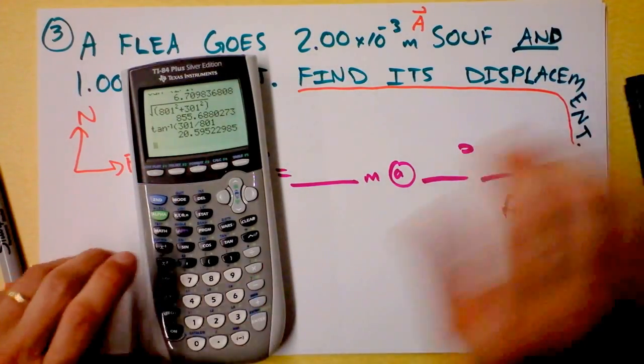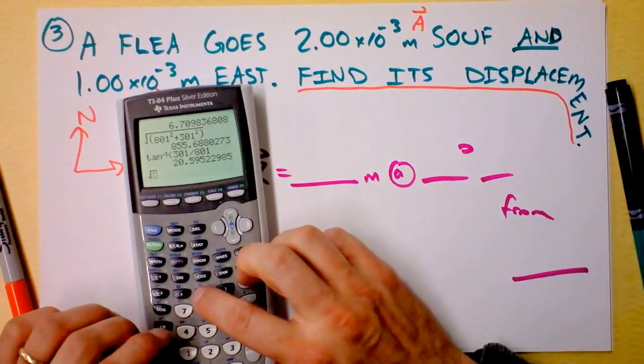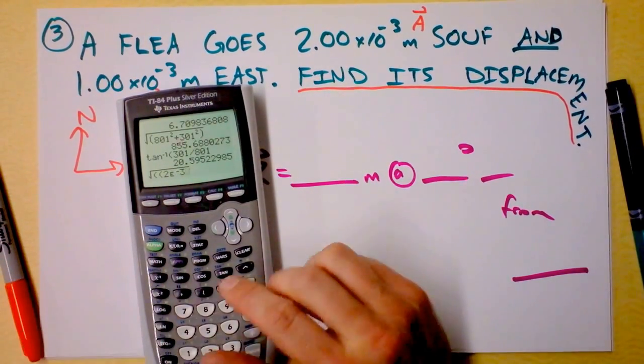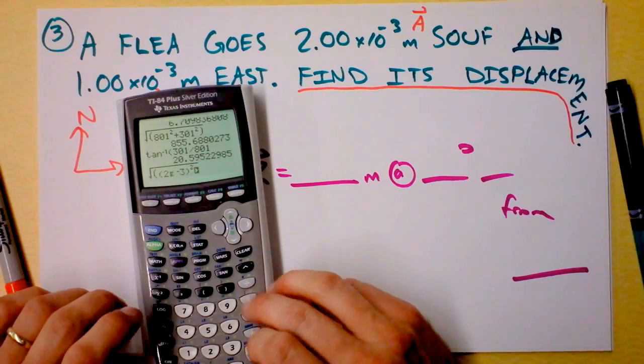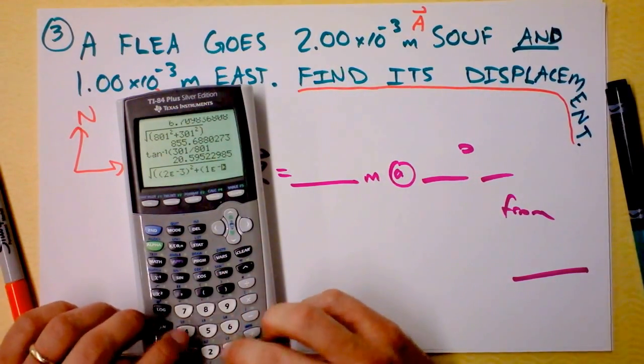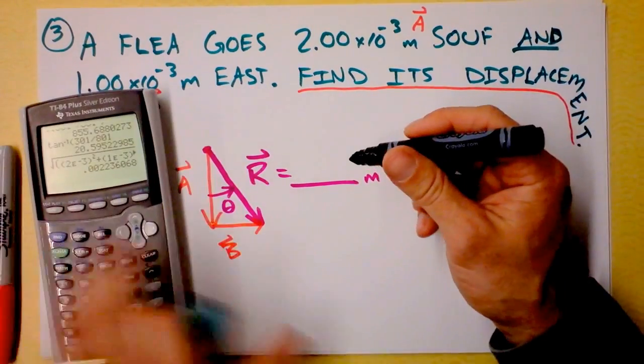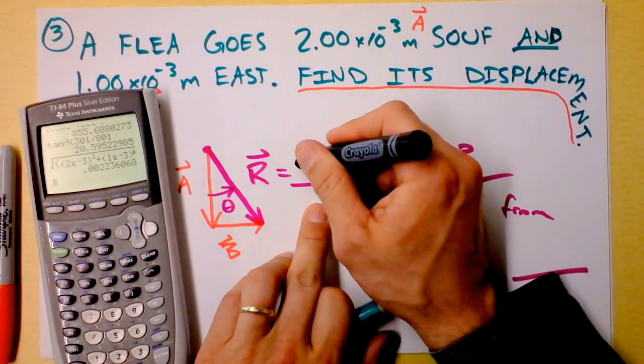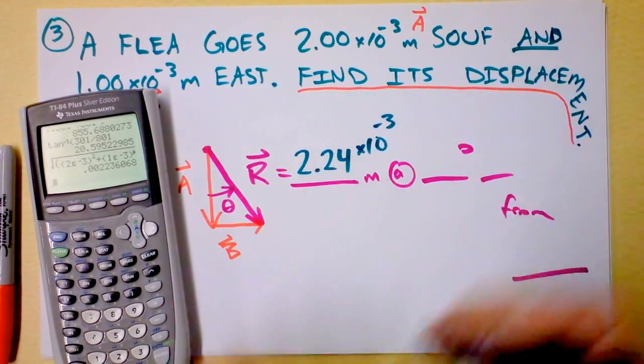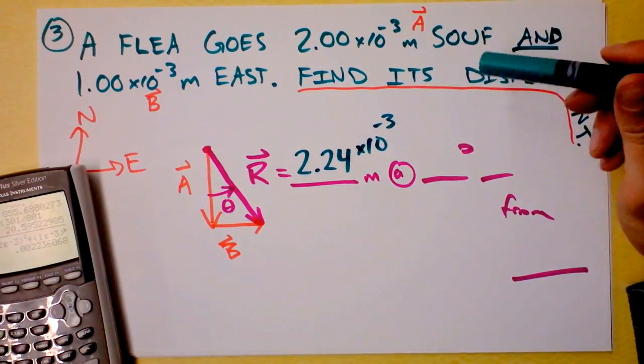Let's do a little bit of Pythagorean theorem, and this is tricky. You have to be careful with your parentheses. I'm supposed to square 2 times 10 to the negative 3rd. So I write 2e negative 3, close parentheses, square, and then I'm supposed to add that to 1e negative 3, close parentheses, square, close parentheses for the square root, and I get a number. And look at that. R is supposed to be 2.24 times 10 to the negative 3rd meters. And that's nice because it's the same ballpark as these numbers.